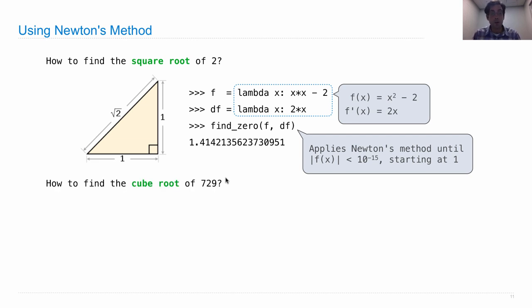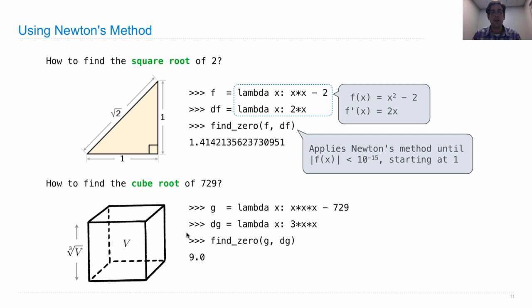So that's how we'd find a square root. How would we find a cube root of 729, for instance? Well, a cube root is the length of the side of a cube with volume v. So we'd have to define an equation where the solution is the cube root of 729, which is x cubed minus 729. So if x is the cube root of 729, this will be 0. And then we have to derive that, which is 3x squared, and then we call find_zero, and it does all the work to tell us that 9 times 9 times 9 is 729.